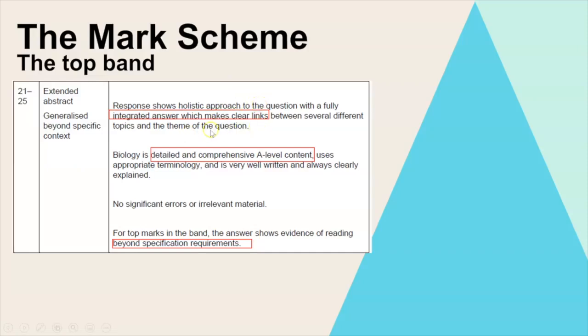Basically, for each of those topics or paragraphs you need to make sure you've made clear links to the title and the theme of the question. The title always starts with 'the importance of' and then it states the topic area. So for every topic area you'll be describing and explaining that process or information and then you have to say why that is important too. You also have to make sure that everything you write about is detailed and fully A Level standard.